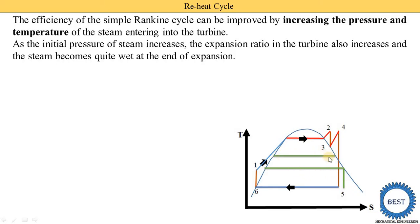Now we increase the pressure. I draw a new line for increased pressure. From this point the steam is supplied to the turbine, and after expansion, the dryness fraction is further reduced — meaning water content increases near the end of the turbine. Increasing the pressure further causes the dryness fraction to reduce even more. When we increase the pressure in the Rankine cycle, we need to provide the reheat cycle to reduce this water content, and thus corrosion and erosion are also reduced.